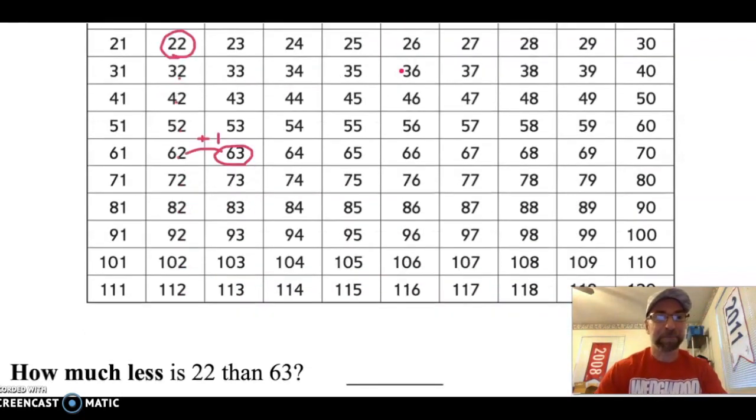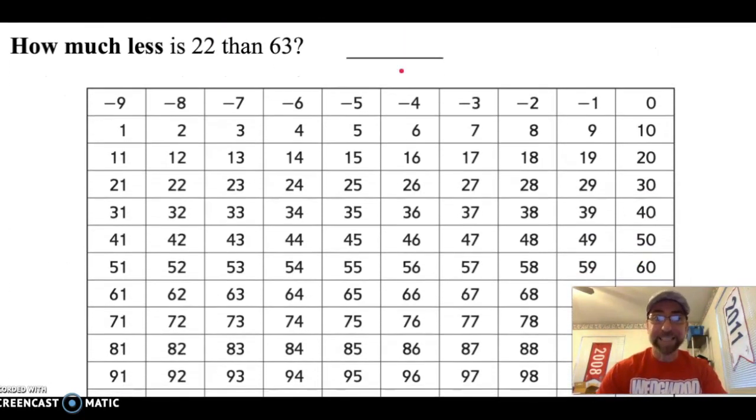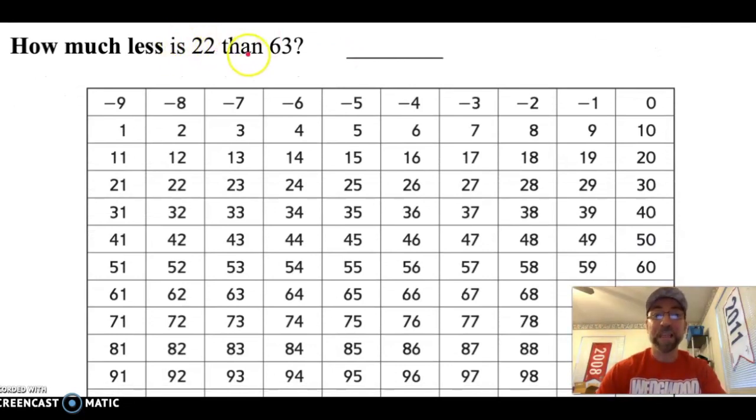Let's try another. How much less is 22 than 63? Go ahead. Hit the pause button and try to solve this one. So the first thing that I did was I circled my two numbers. And then I always like to start with my smaller number. And I'm going to count my tens first. 10, 20, 30, 40 plus 1 gives me 41.